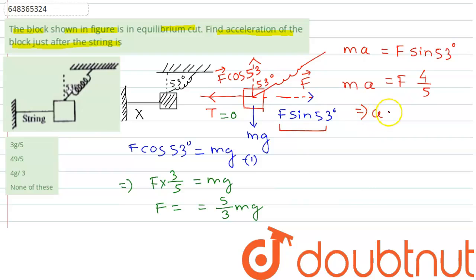Now we can write acceleration as, in place of F we will put 5 by 3 into 4 by 5. So this will be F sin 53 into Mg divided by M. We will cancel these terms, and we can write acceleration is 4 by 3 into G. So the acceleration will be 4G by 3.